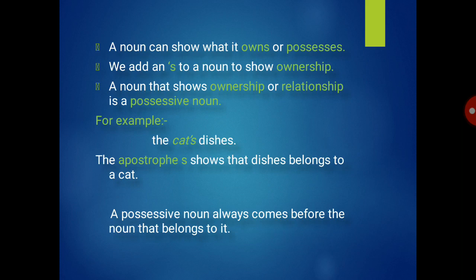A noun that shows ownership or relationship is a possessive noun. So what is a possessive noun? A possessive noun is one which shows ownership or relationship. For example: the cat's dishes — the apostrophe s shows that the dishes belong to the cat.